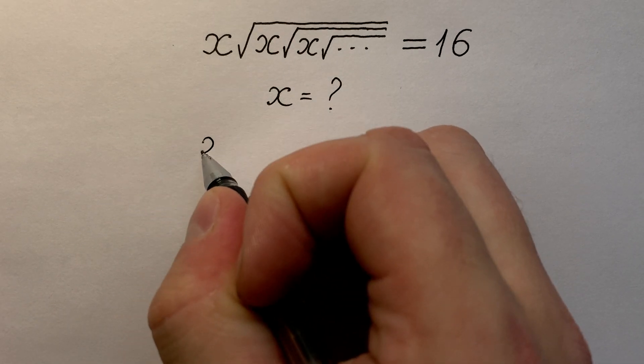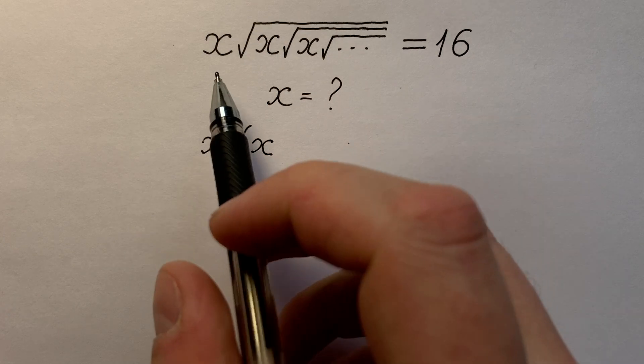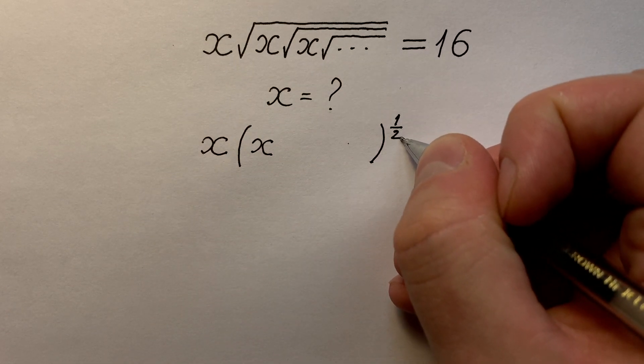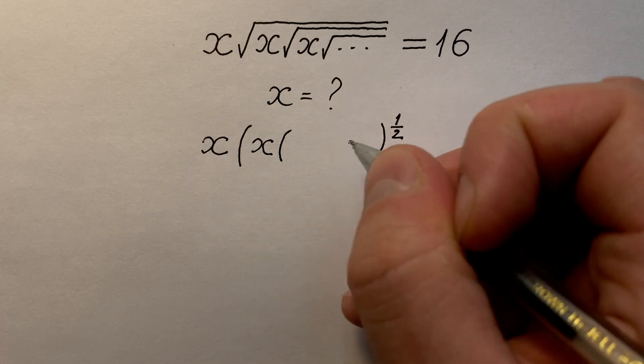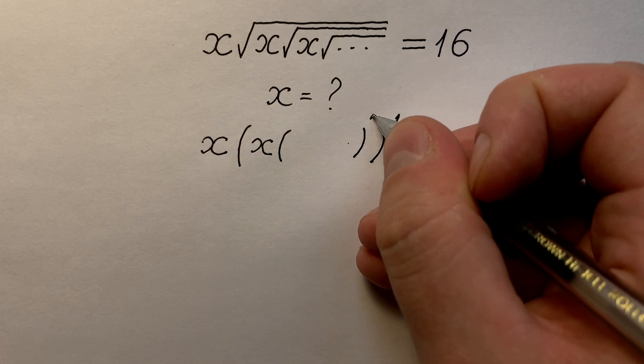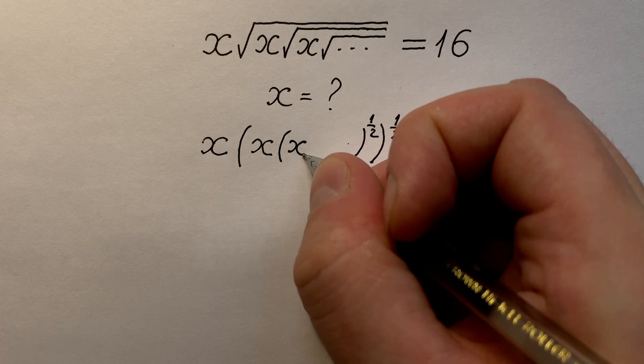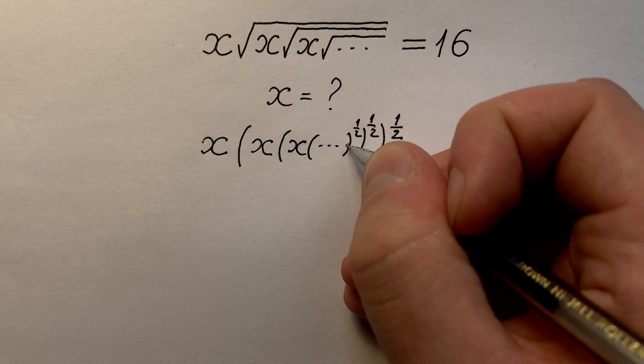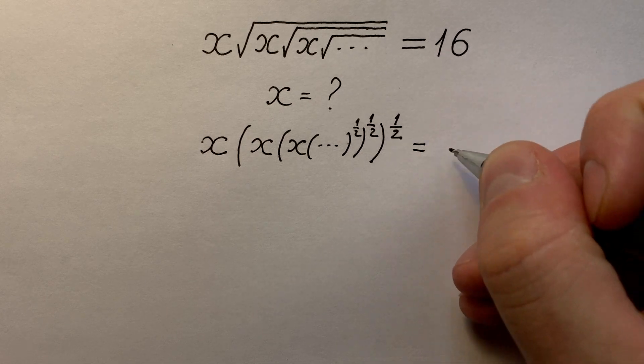Let's write it like x times x, and instead of square root we write to the power of 1 divided by 2, x times bracket 1 divided by 2, x bracket 1 divided by 2, and another one, and it equals to 16.